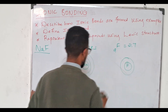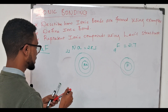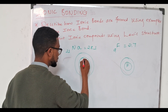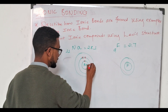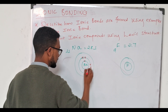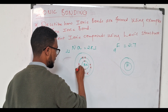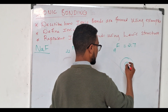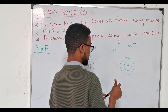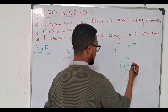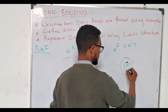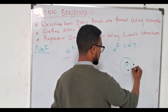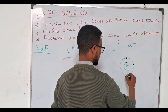Sodium has three shells: two electrons in its first shell, eight in the second shell, and one in the last shell. Fluorine has two shells: two electrons in its first shell and seven electrons in its second shell.